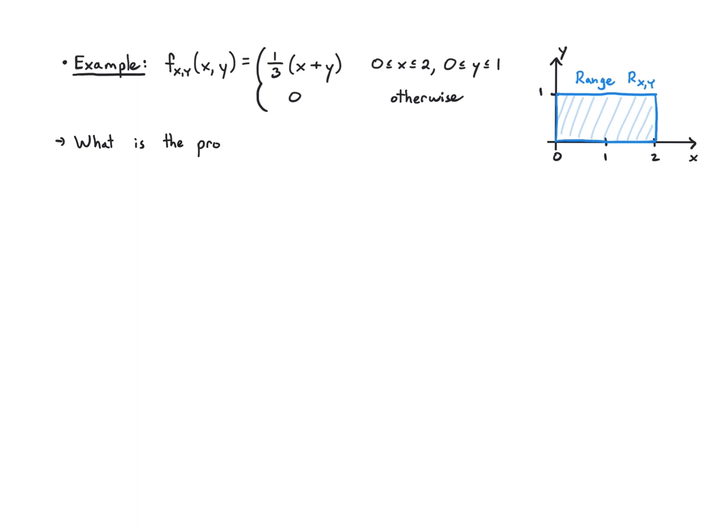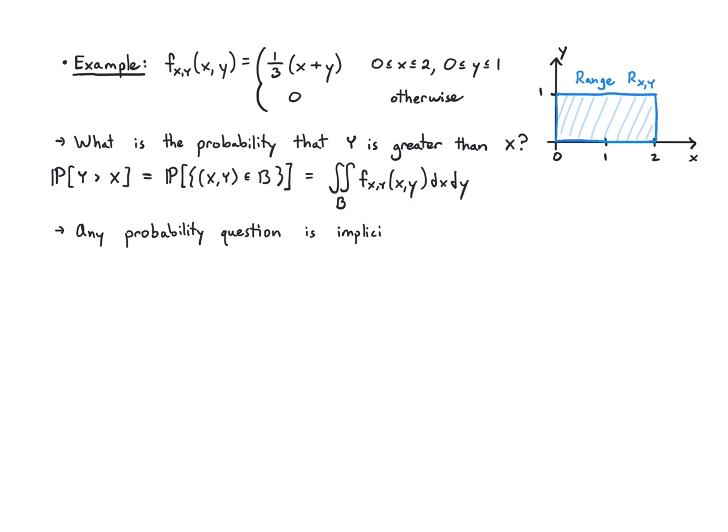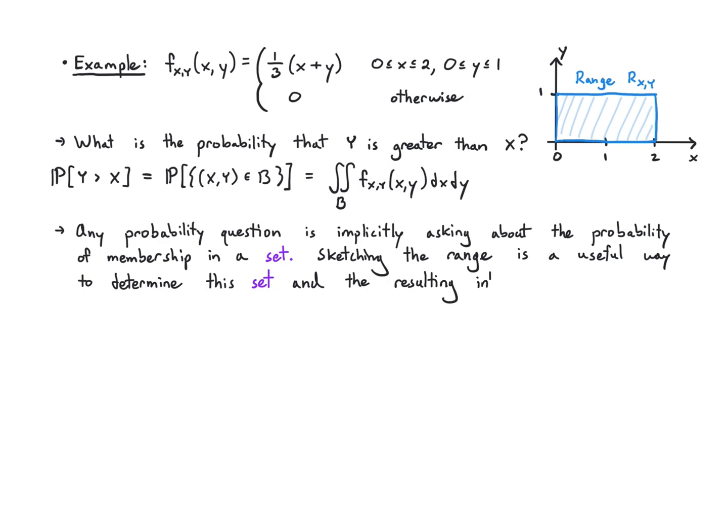Let's ask this question: what is the probability that Y is greater than X? It's a very natural question. We need to remember that this statement Y>X is actually the same as asking whether (X,Y) belongs to a particular region B, and then integrating that region B over the joint PDF. Any probability question is implicitly asking us about the probability that we belong to a particular set. Sketching the range in the 2D case is a really useful way to figure out what this set actually is and where we are supposed to integrate. Before you might have been able to figure out that region in your head, but as you go to the two variable case and beyond, that's going to get harder and harder.